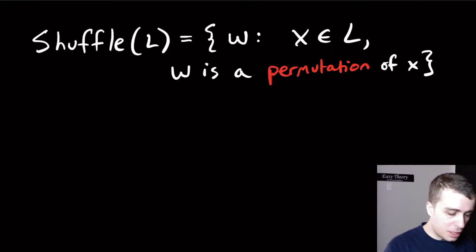Hi, I want to talk about this problem, which is we're given a particular language L, then shuffle of L is all the strings W such that W is a permutation of some string in the language.